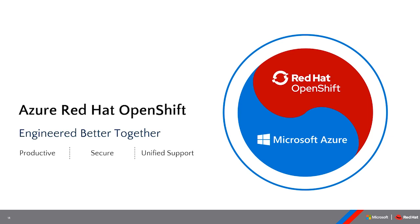We want to highlight that ARO is really the result of a jointly engineered and jointly supported effort, leveraging talent, innovation, and open source leadership from both companies. You can take advantage of the security and robustness of OpenShift along with the flexibility and elasticity of Azure and its broader ecosystem and services.